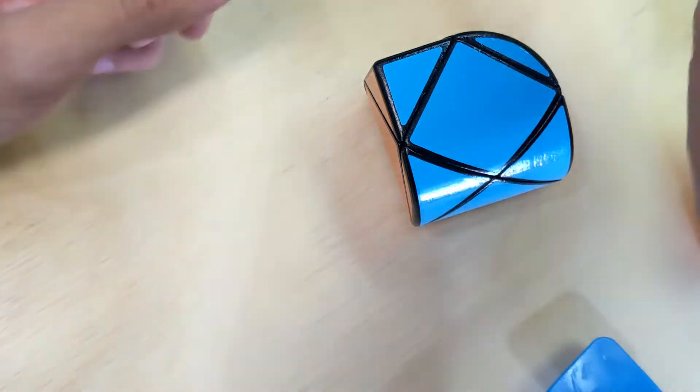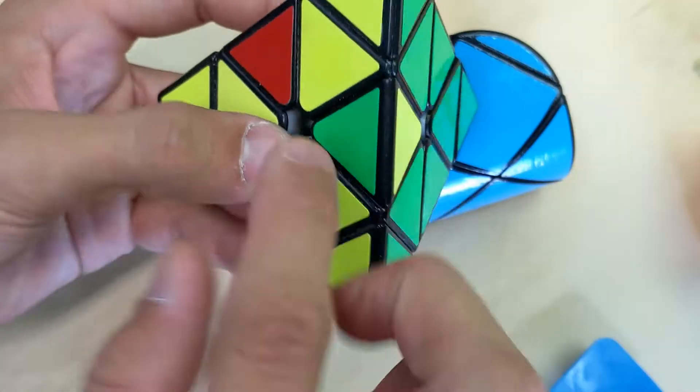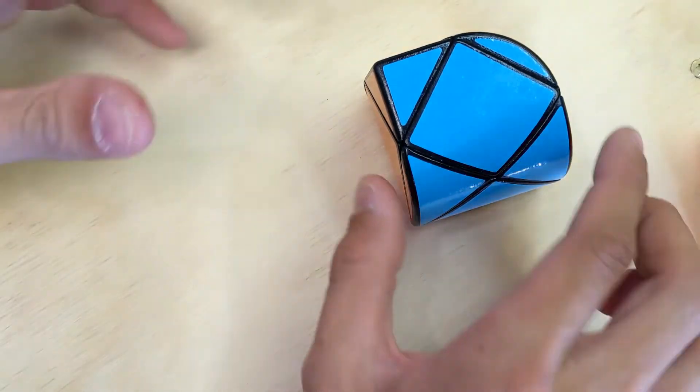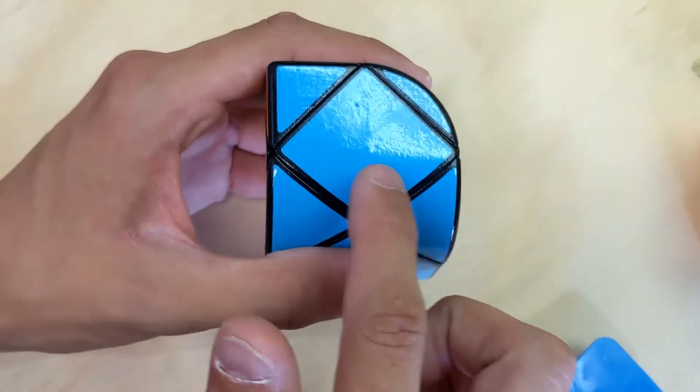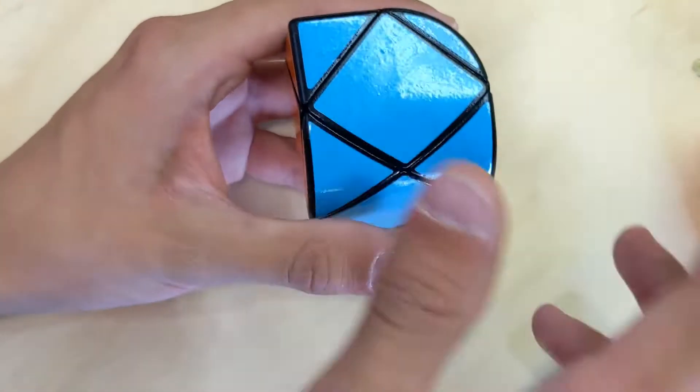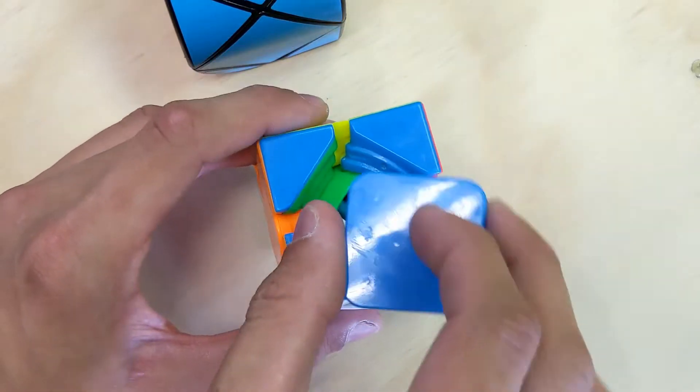Similar to the edges on a pyraminx, when you can have two edges flipped, it's just like that. And when you have the two edges flipped on this, it's actually the center bits, and those will be turned around, and they actually have an orientation. Unlike on a regular skewb, where it makes no difference.